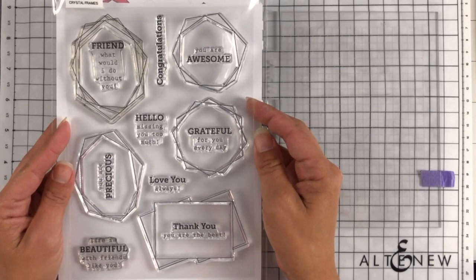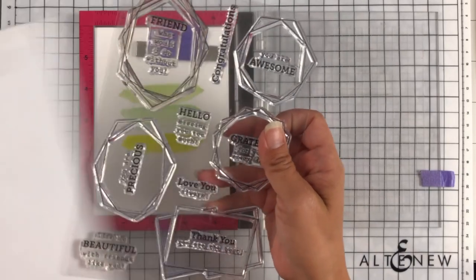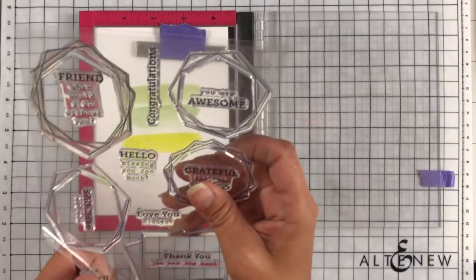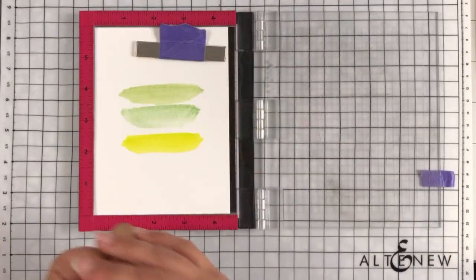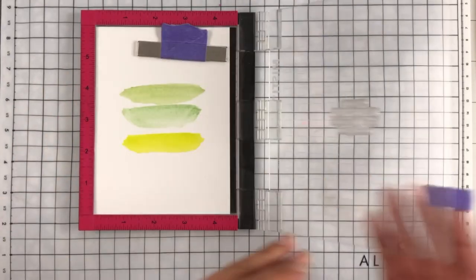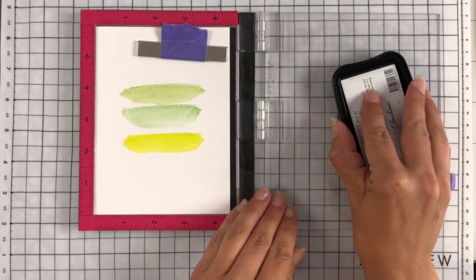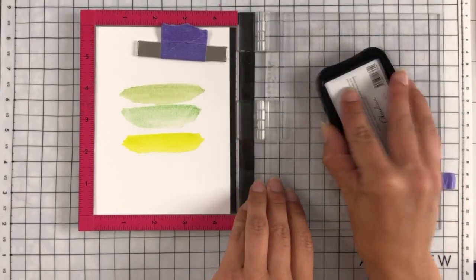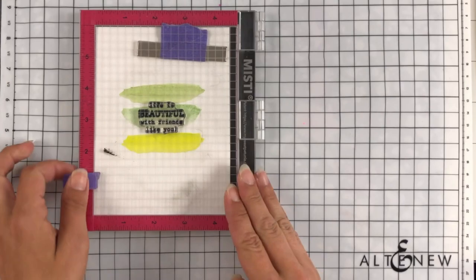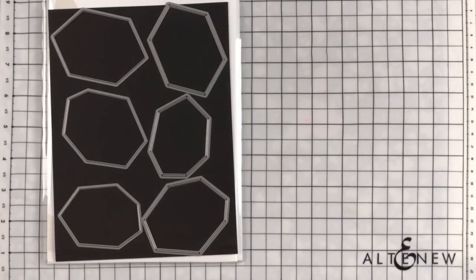Now this is the Crystal Frames 6x8 stamp set. This is just a really gorgeous stamp set. I'm going to use one of the sentiments on here for one of my watercolor backgrounds. So once again this one is just making sure you're lining it up straight and I'll use that Obsidian Black ink again to stamp that down. And I'm going to set that off on the side for just a moment.